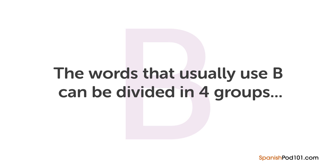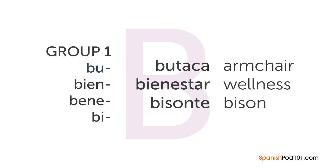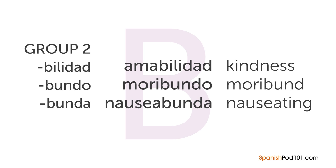Let's start with B. Words that usually use B can be divided into four groups. First, all words that begin with BU, BIEN or BENE, and BI — for example, 'butaca' meaning armchair, 'bienestar' meaning wellness, and 'bisonte' meaning bison. Second, words that end in BILIDAD, BUNDO, or BUNDA — for example, 'amabilidad' meaning kindness, 'moribundo' meaning moribund, and 'nauseabunda' meaning nauseating.